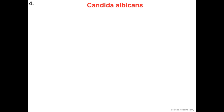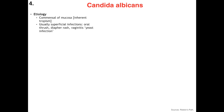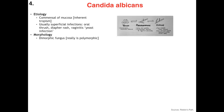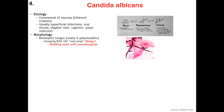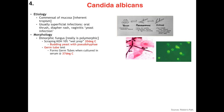Next up is Candida albicans, our big exception in all ways. She's a commensal flora of our mucosa, giving her an inherent tropism. She usually causes superficial infections like oral thrush, diaper rash, and vaginitis, but in this lecture I will only cover when she becomes opportunistic. Morphologically, First Aid describes her as dimorphic while other sources call her polymorphic. On skin scraping treated with KOH (wet prep) at 20 degrees, you will see budding yeast with pseudohyphae — that's the buzzword. The gold standard is the germ tube test, which shows forming germ tubes when cultured in serum at 37 degrees C. Germ tubes are just the beginning of formation of hyphae.